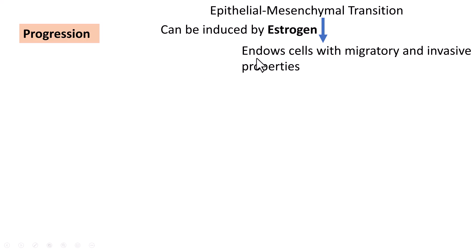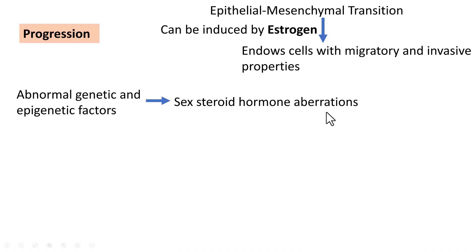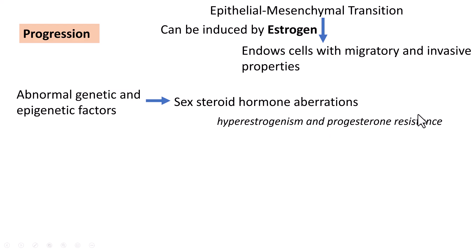What is the reason for increasing estrogen levels? It could be due to abnormal genetic or epigenetic factors leading to sex steroid hormone aberrations — specifically hyperestrogenism and progesterone resistance. This can induce EMT, endowing cells with migratory and invasive properties.